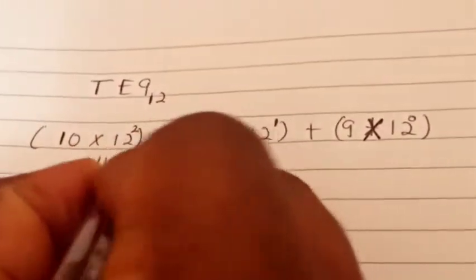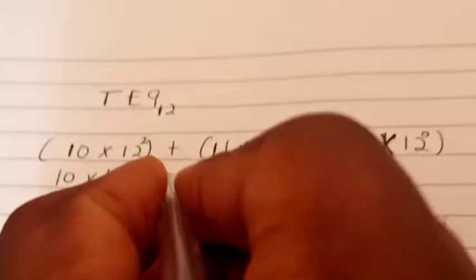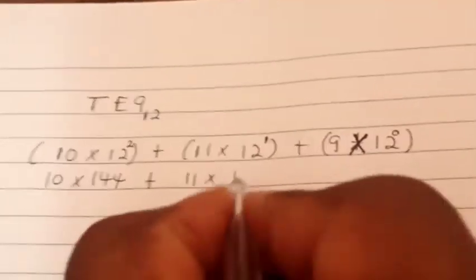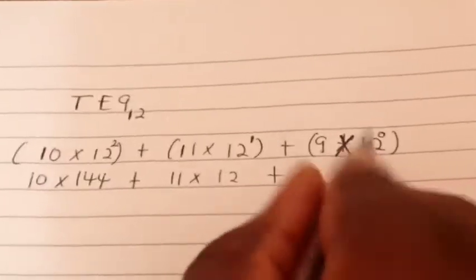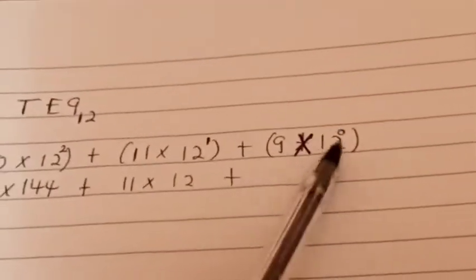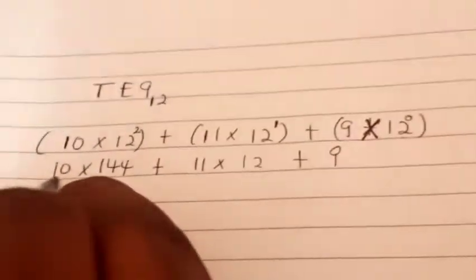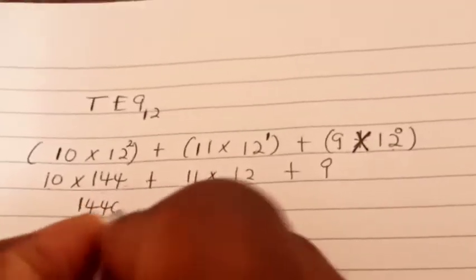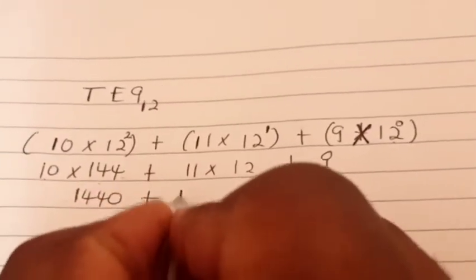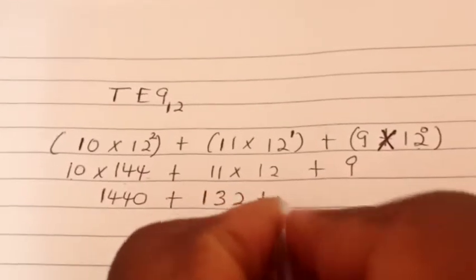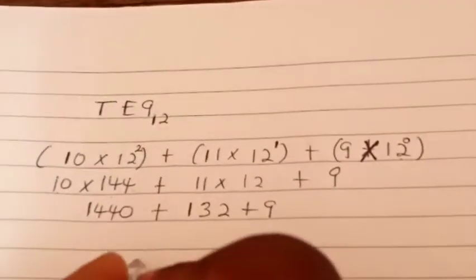So you have 10 times 144 plus 11 times 12, plus any number raised to power 0 is 1, so we have 9 times 1, which is 9. 144 times 10, we add a 0 here, so 1440 plus 132 plus 9. Let's do the addition vertically like this.